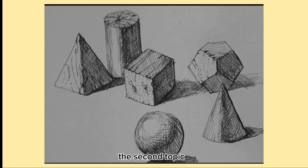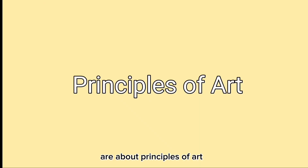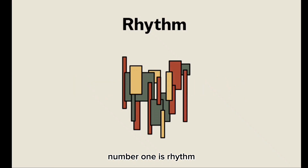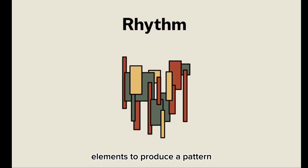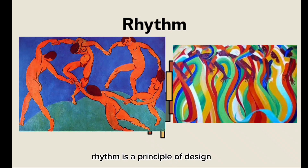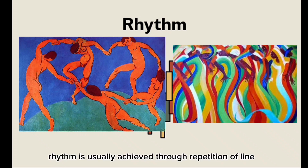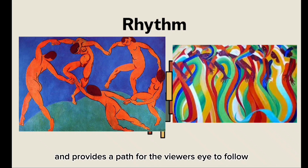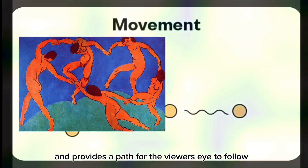The second major topic is the principles of art. The first principle is rhythm, which refers to the repetition of certain elements to produce a pattern. Rhythm is a principle of design that suggests movement or action, usually achieved through repetition of line, shape, colors, and more. It creates a visual tempo in artworks and provides a path for the viewer's eye to follow.